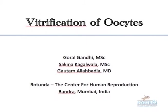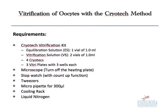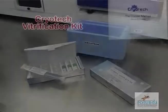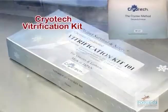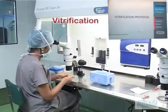Vitrification of oocytes using the Cryotech method. Before beginning the process, ensure that the microscope stage heating is turned off and the room temperature is around 25 to 27 degrees centigrade. Bring Equilibration Solution (ES) and Vitrification Solution (VS) vials to room temperature at least one hour before vitrification.